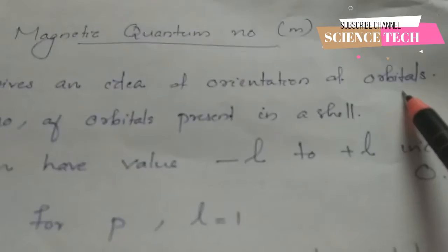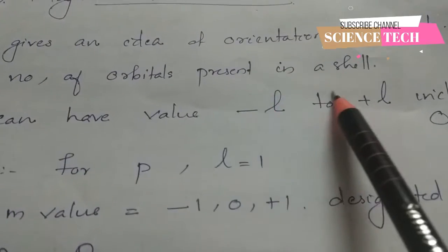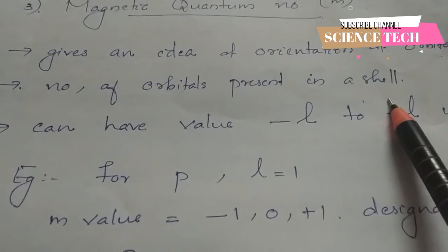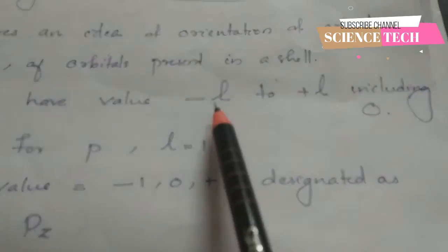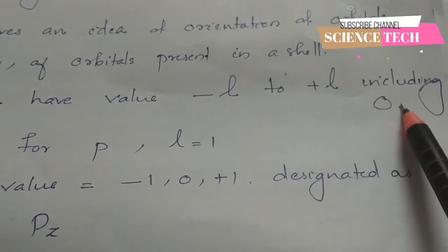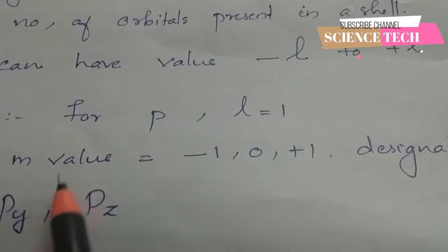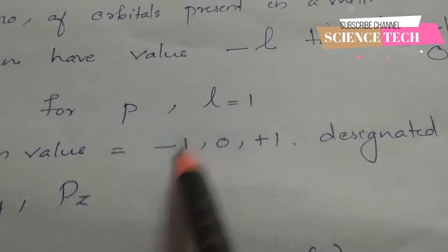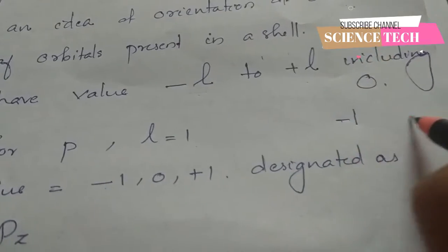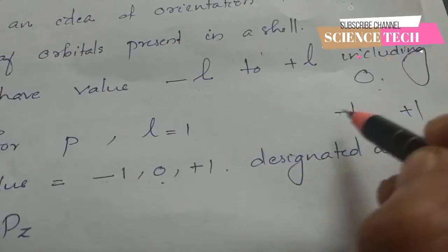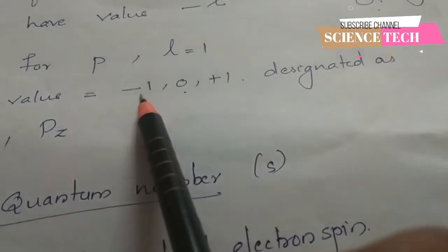The orientation of an orbital is described by the magnetic quantum number. It gives the idea of the number of orbitals present in a shell. The value of the magnetic quantum number ranges from minus l to plus l, including 0. For example, for the p orbital, the value of l is 1, so the value of m ranges from minus 1 to plus 1, including 0. The values are minus 1, 0, plus 1.